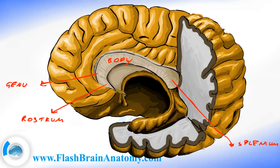And now the parts of the fornix. We had the fimbria over here — it's a small thin layer of fibers that leave the hippocampus. Then we had the crus of fornix. Then the part where the fornix from both sides joins is called the body. And here are the anterior pillars of fornix.